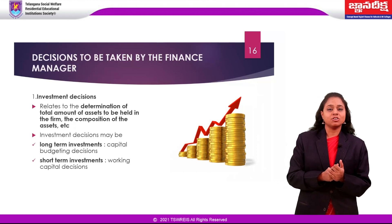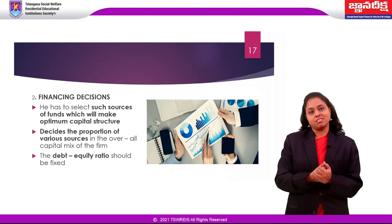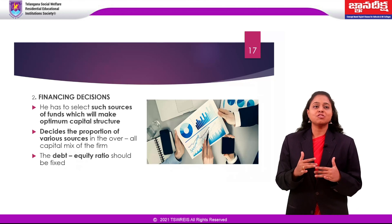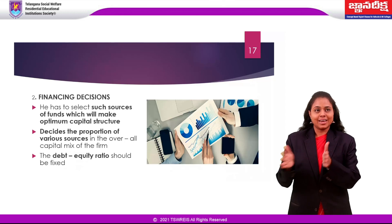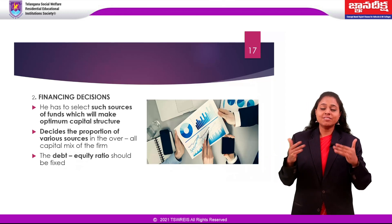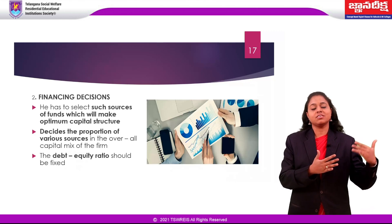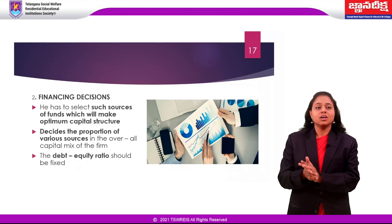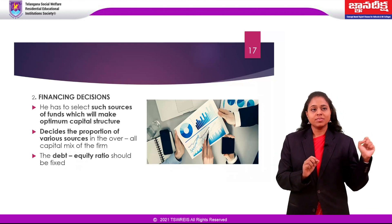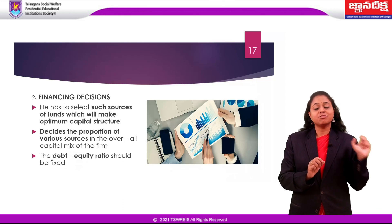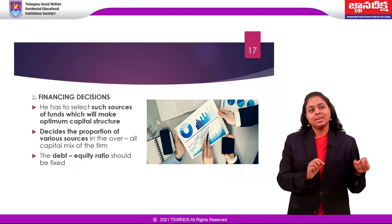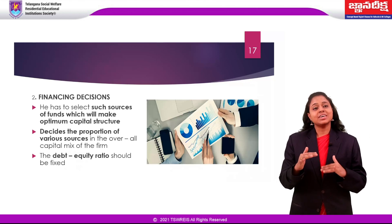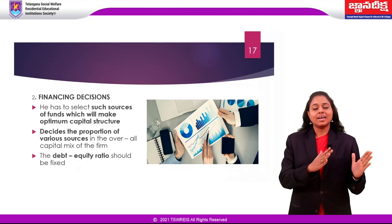The second decision is the financing decision. The finance manager selects sources of funds that give an optimum capital structure. He decides among different sources like debentures, equity, and preference shares as to which is most ideal. The debt-to-equity ratio is the ideal one preferred in most organizations — that is debt 50% and equity 50% — giving proper significance and importance to both debt and equity.